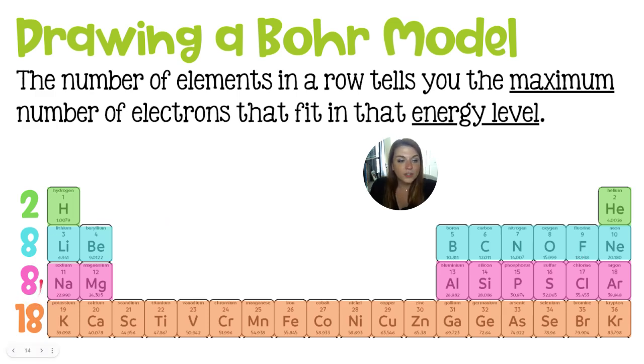We can also fit eight electrons in the third energy level. And that again, indicated by the fact that there are eight elements in that period. And then we get to the fourth row or the fourth period rather, and this has 18 elements, which gets crazy. And the big jump here is because we organize our electrons a little bit more specifically. And I will talk about that in a future video.